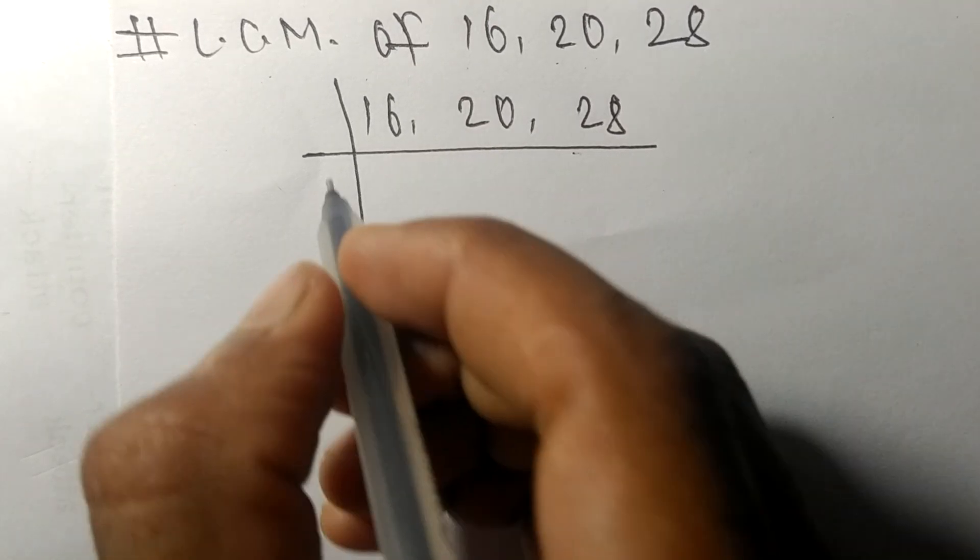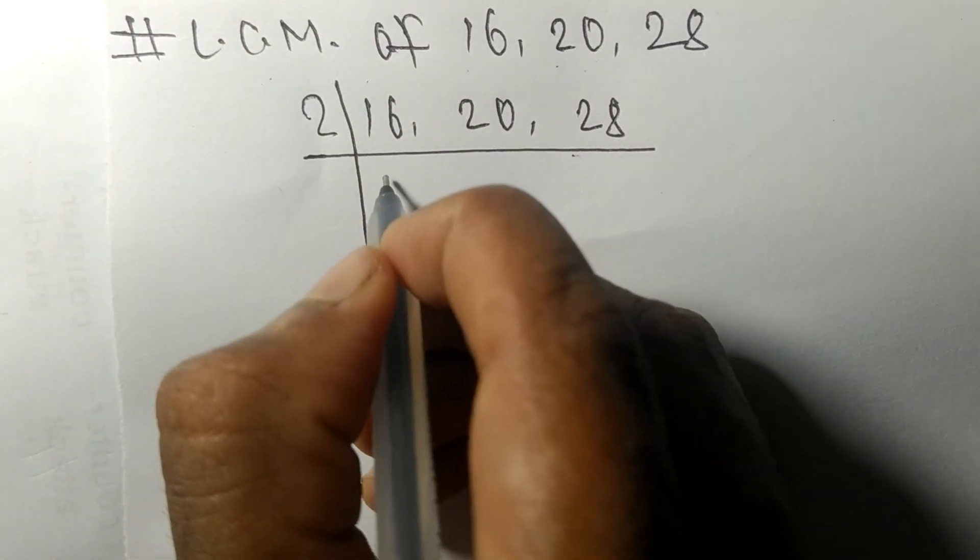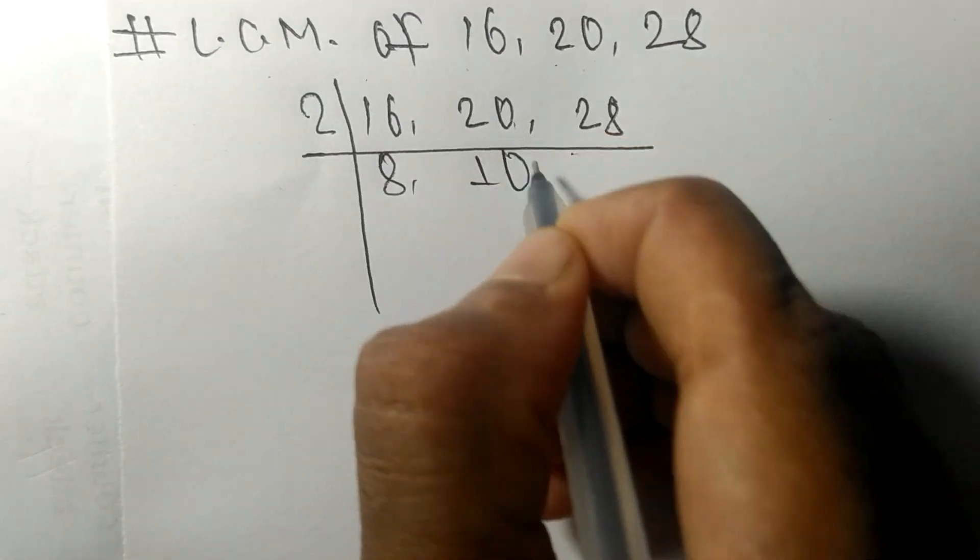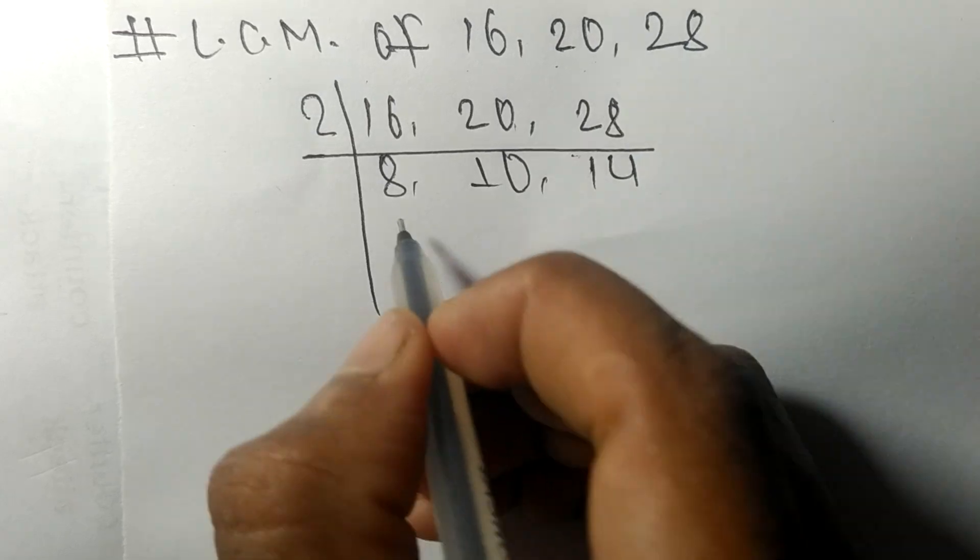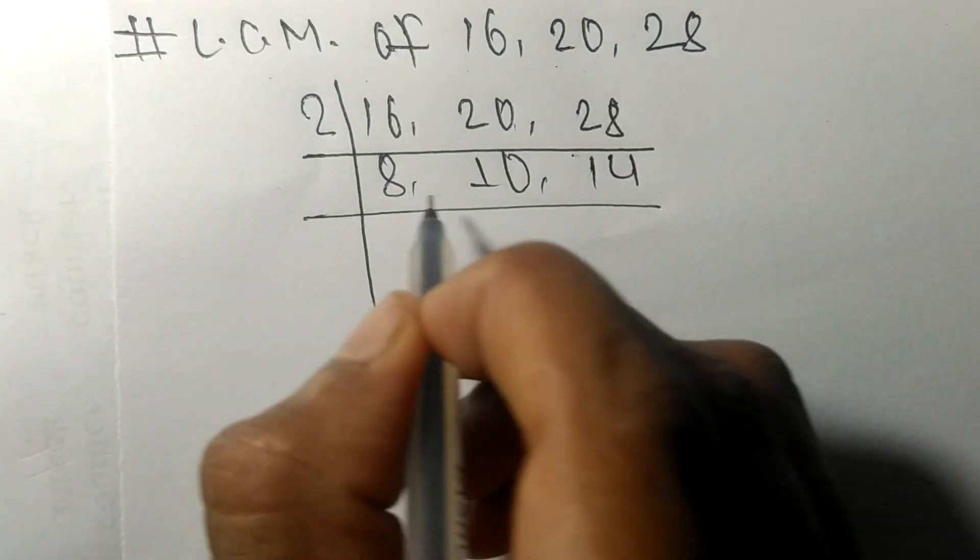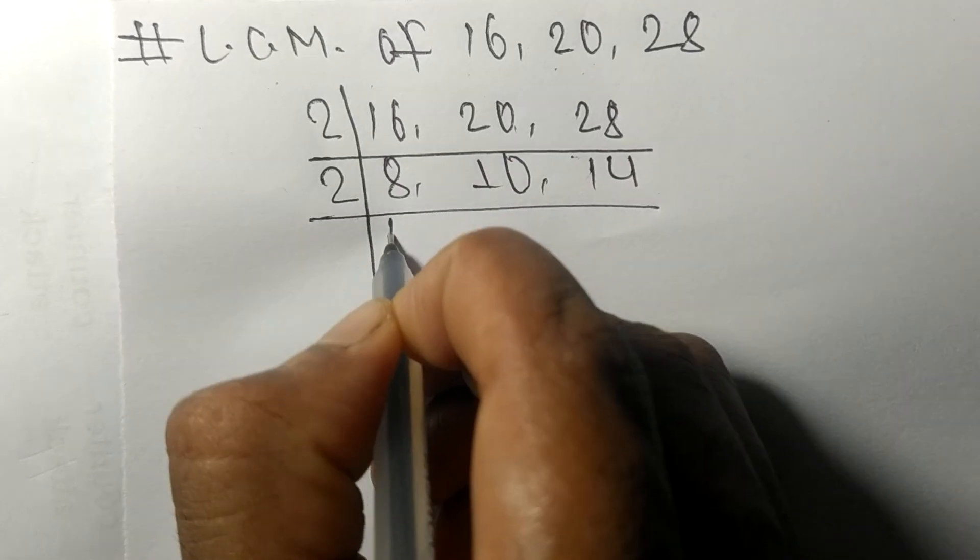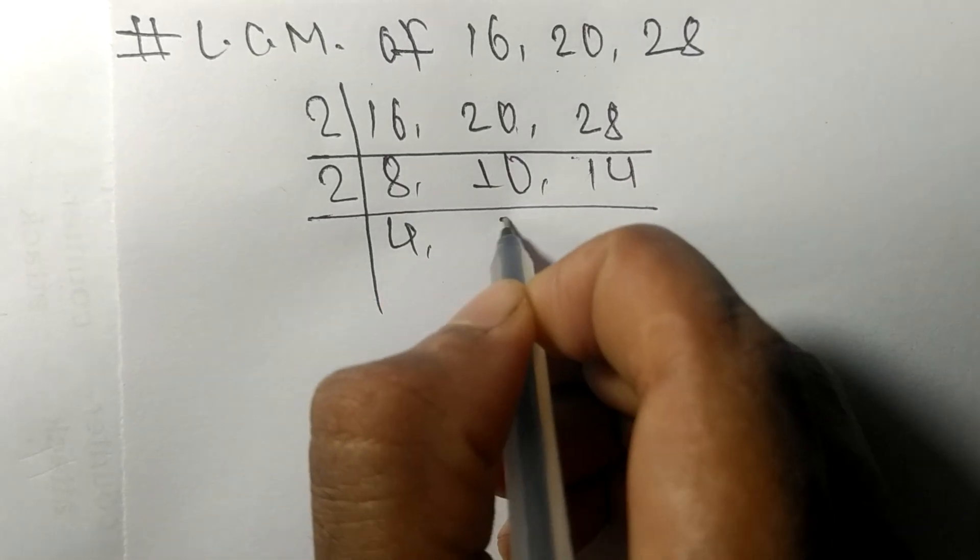These all numbers are divisible by 2: 2 times 8 means 16, 2 times 10 mean 20, 2 times 14 mean 28. Again these all numbers are divisible by 2: 2 times 4 mean 8, 2 times 5 mean 10, 2 times 7 mean 14.